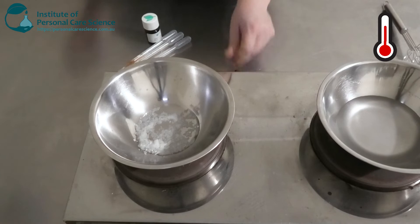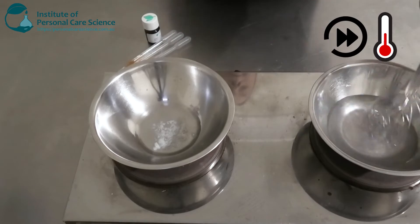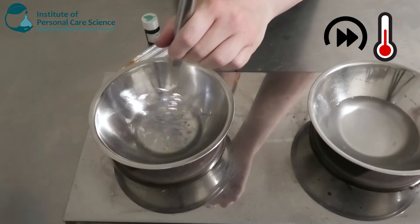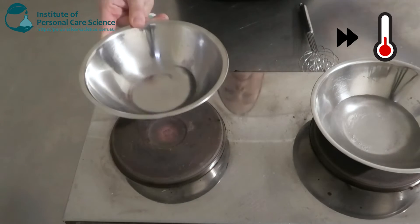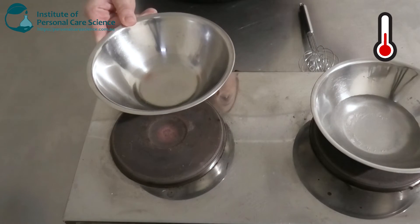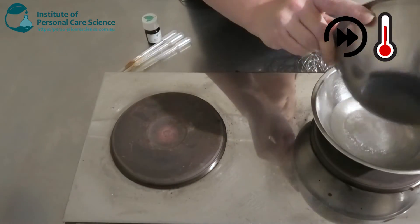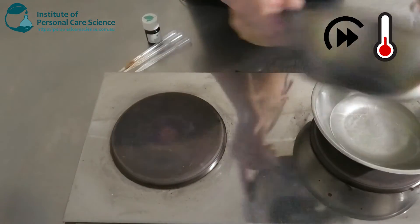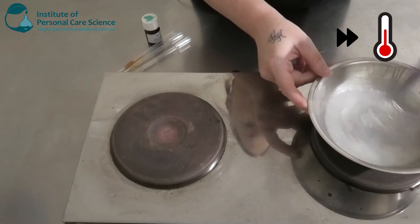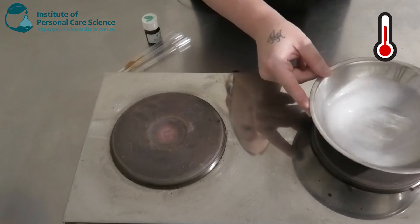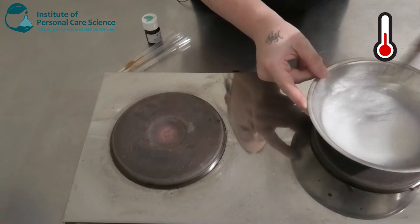And we're going to pop that one on heat also. Okay, now I'm going to add my oil phase once it's all melted to my water phase. And just using high shear, you'll see a nice emulsion start to form.